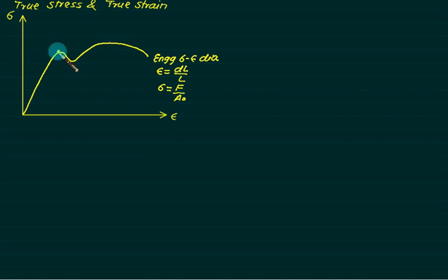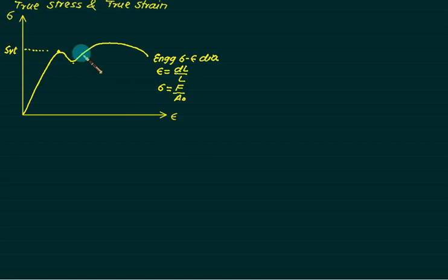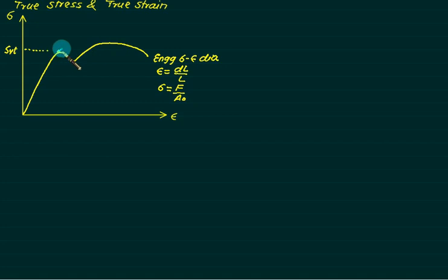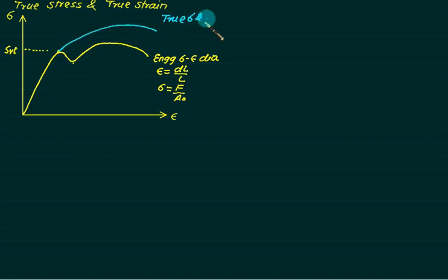This point is called the upper yield point, and this one is the lower yield point. In practice, the area continuously decreases. Since the area will continuously decrease, this graph will deviate from that point and go differently. This is called the true stress-strain diagram.